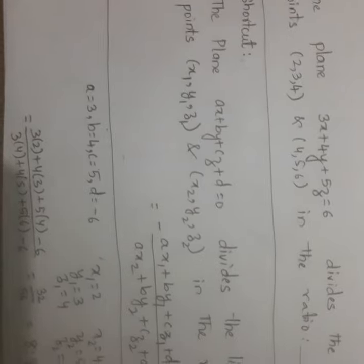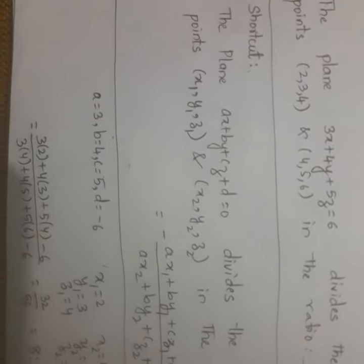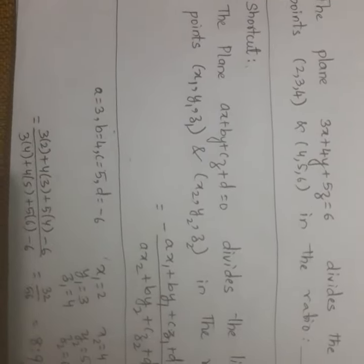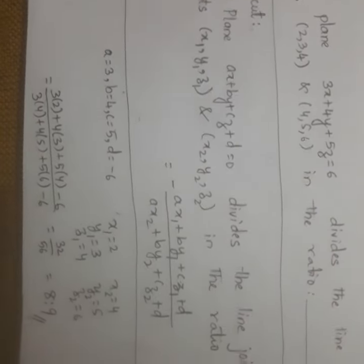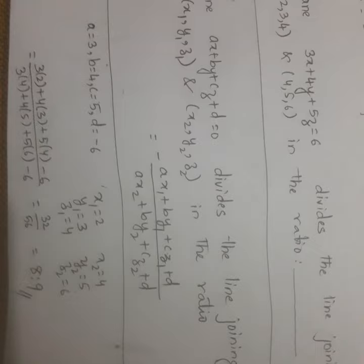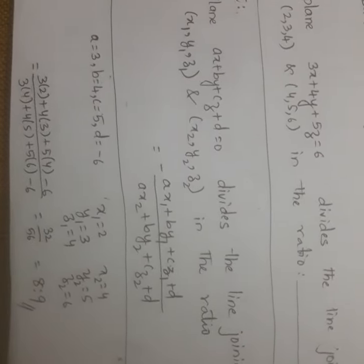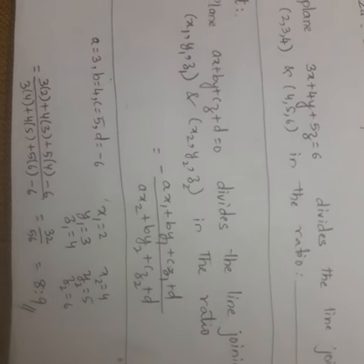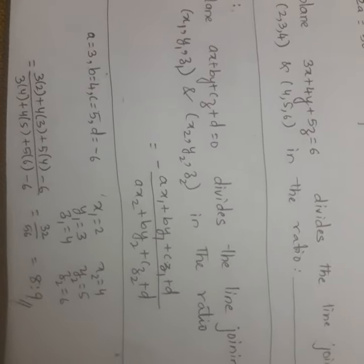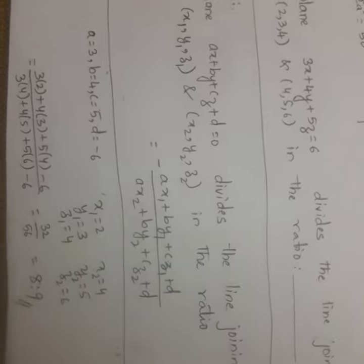In order to solve this problem, we have one shortcut present in M-set. The shortcut is: the plane ax + by + cz + d divides the line joining the points (x1, y1, z1) and (x2, y2, z2) in the ratio minus (ax1 + by1 + cz1 + d) by (ax2 + by2 + cz2 + d).